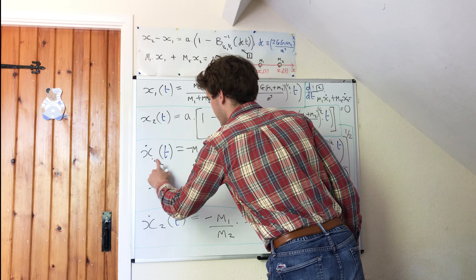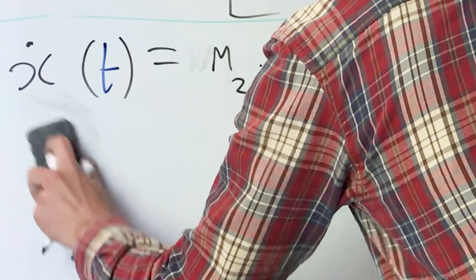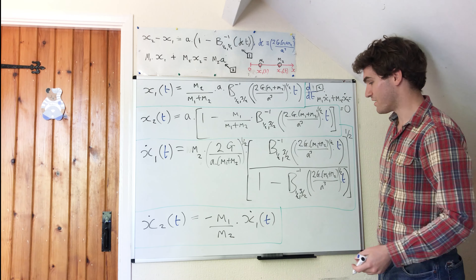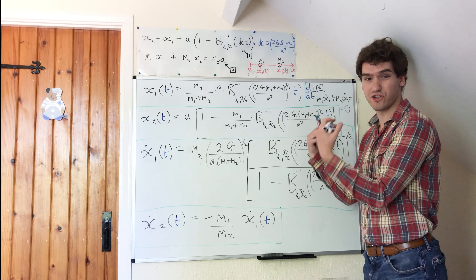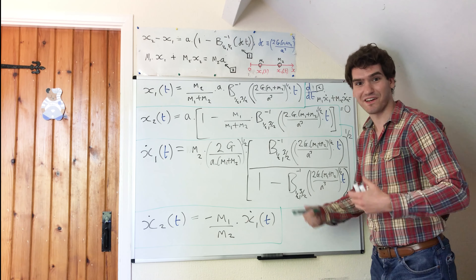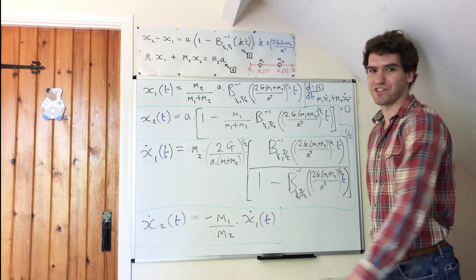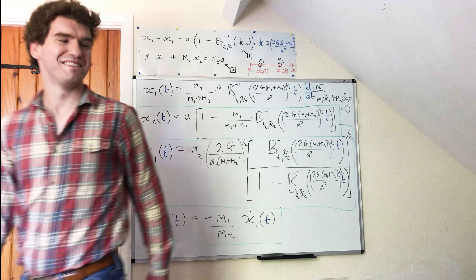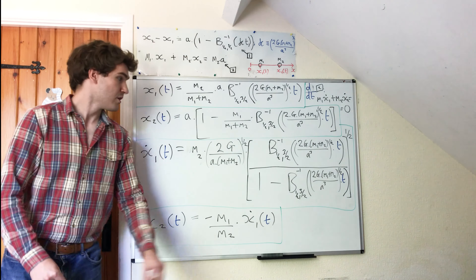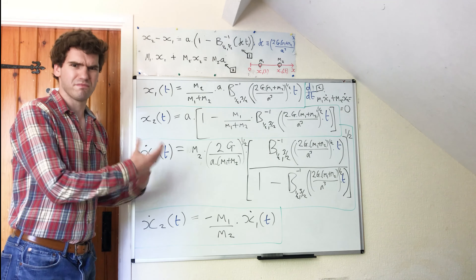So in terms of what I can fit on my board, this is the full juicy solution to the problem of two masses coming together under the influence of their own mutual gravitational attraction. Thank you very much for watching, and don't forget to join me in the next video where we're going to be doing graphical analysis of these results and try to get some actual meaning out of them — because looking at them right now it doesn't really feel that meaningful.